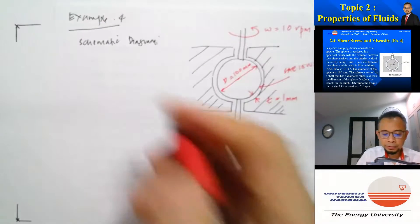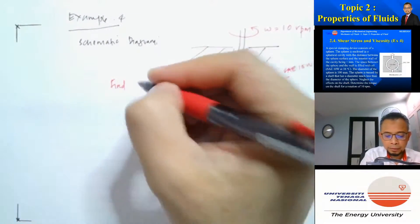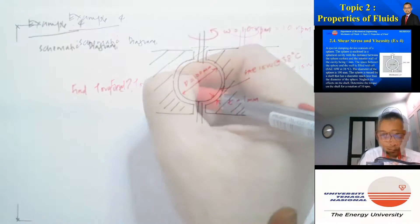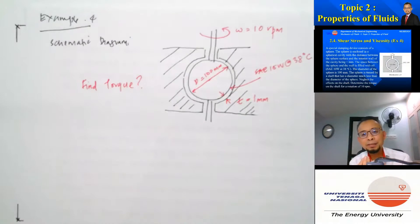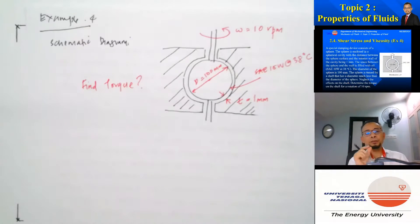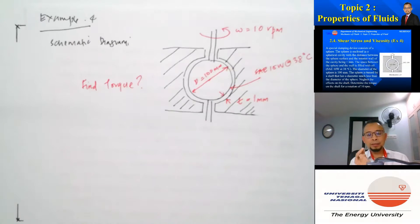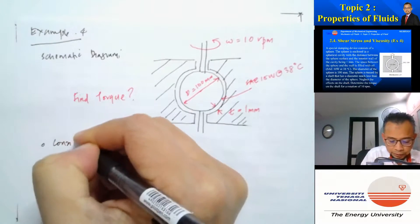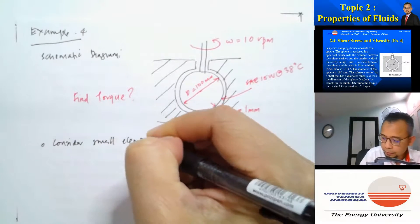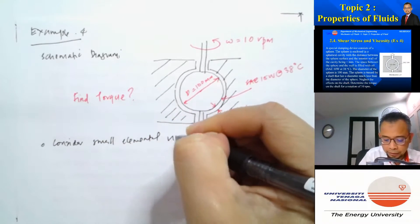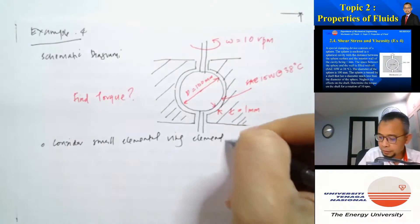We are asked to find the torque. Just as in the previous part, the first thing we need to do is find a suitable elemental element where the shear stress is constant everywhere on that element. So let's consider a small elemental ring element, which is slightly different from before.